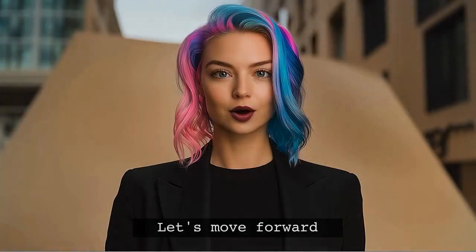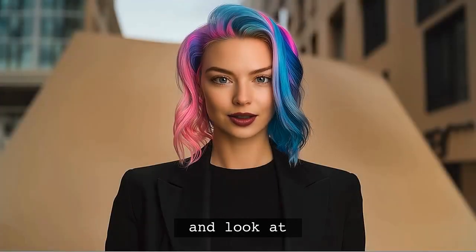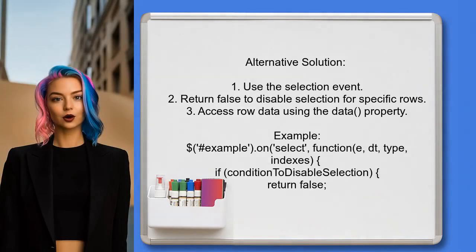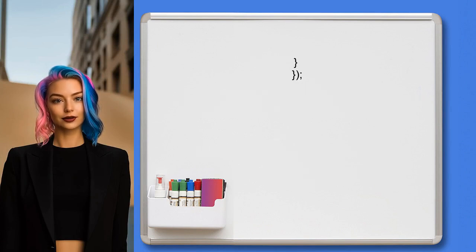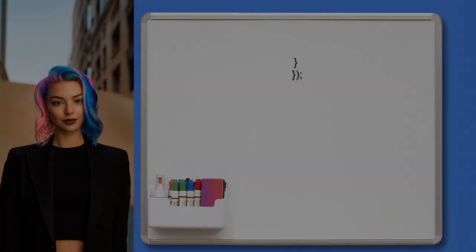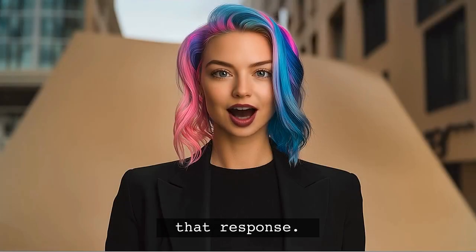Another answer suggests that you can disable row selection by returning false in the selection event. This will prevent the selection of specific rows based on their data.